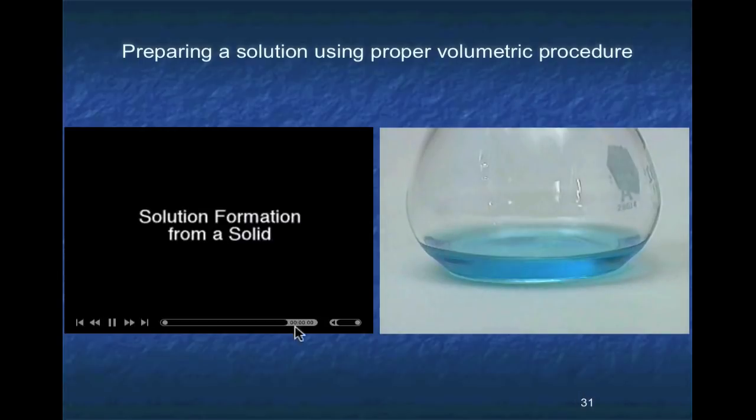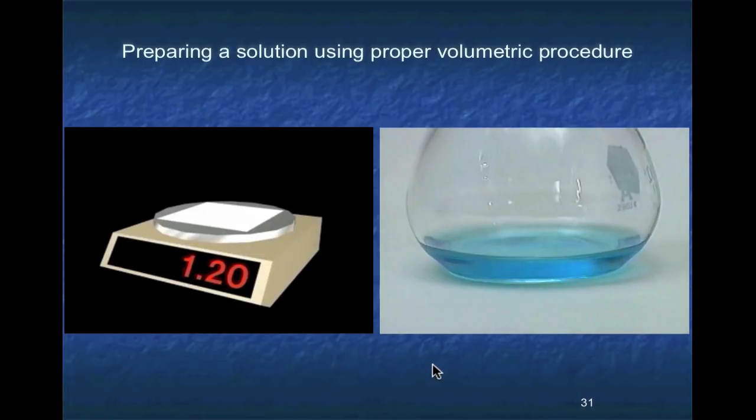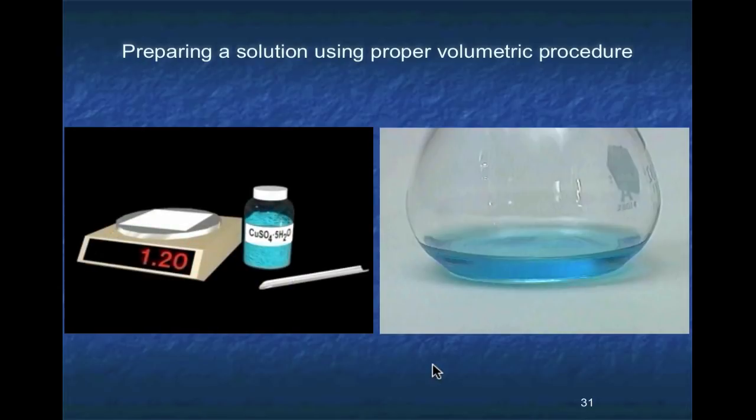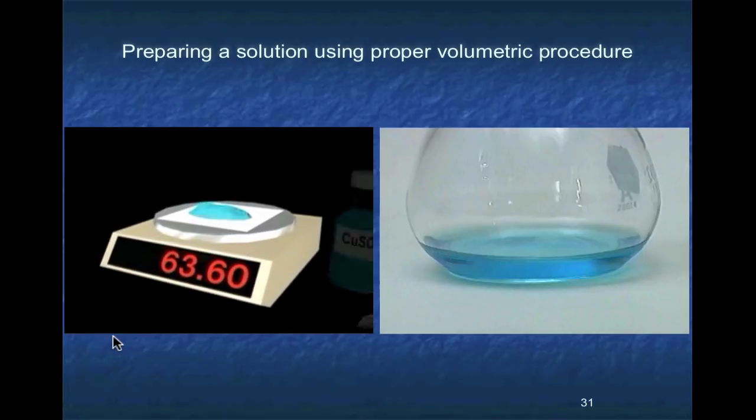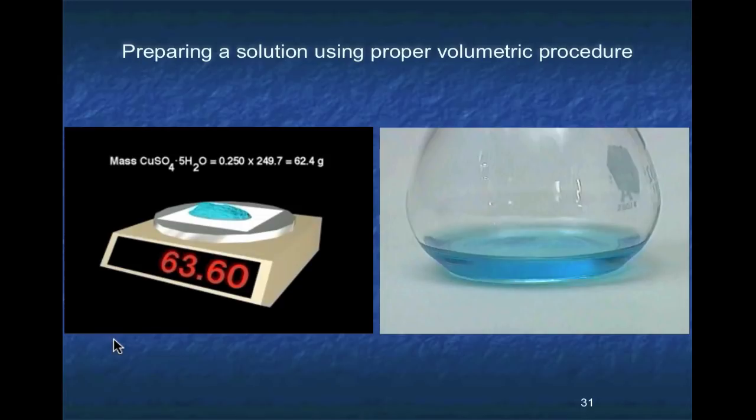To prepare a solution of known concentration from a solid solute, we must first weigh out an appropriate amount of the solid. For example, to prepare 250 milliliters of a one molar solution of copper sulfate, we first weigh out 0.250 moles of copper sulfate. Most commonly, copper sulfate is available as the pentahydrate. The formula mass of copper sulfate pentahydrate is 249.7. We weigh out precisely one-fourth of this mass, 62.4 grams. Note that the weight on the balance is the sum of the paper and copper sulfate.